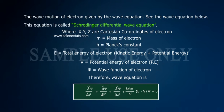Therefore, wave equation is: ∂²ψ/∂x² plus ∂²ψ/∂y² plus ∂²ψ/∂z² plus 8π²m/h² into (E minus V)ψ equals zero.